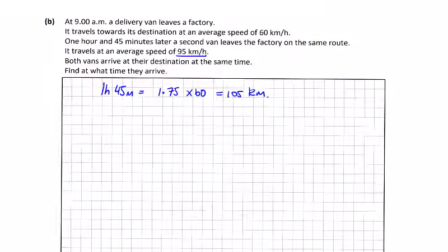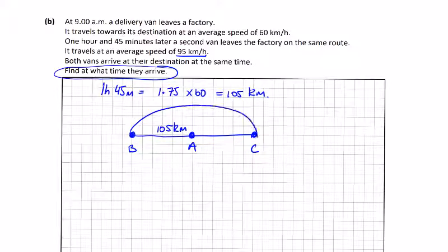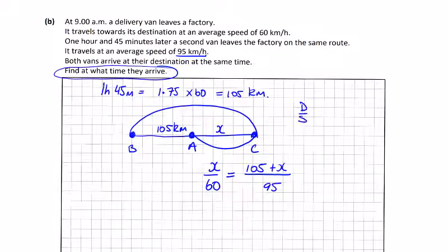So the second guy is going 95 kilometers an hour, and they will arrive at their destination at exactly the same time. So let's just do a little straight line diagram here. Van A travels 105 kilometers before Van B starts. So Van A is now here, and Van B is here, and they get to point C at exactly the same time. So this time and this time must be equal. So let's call this distance x. So for Van A, he's going at a speed of 60. These times are equal. Van B has to travel 105 plus x, and his speed is 95. So this is distance over speed being equal to time, and we can equate the two times.